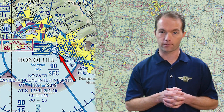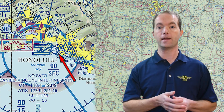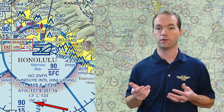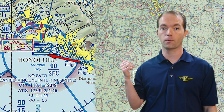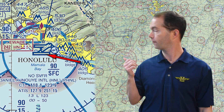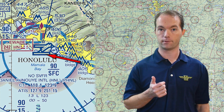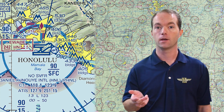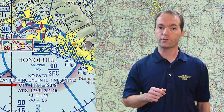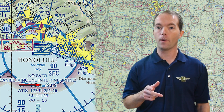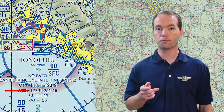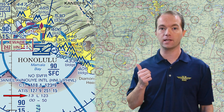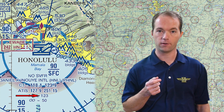If you see an anchor, that means it's a seaport — like here in Honolulu. Field elevation is zero, which makes sense, and the water runway is 5,000 feet long. Since we're here, we can also see there are two tower frequencies and that we can get the weather from the ATIS on 127.9. The longest paved runway is 13 feet above sea level and it is 12,300 feet long.